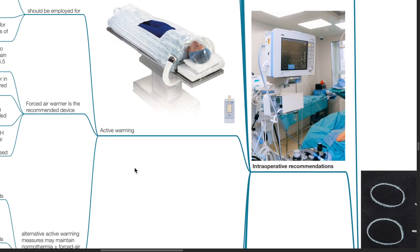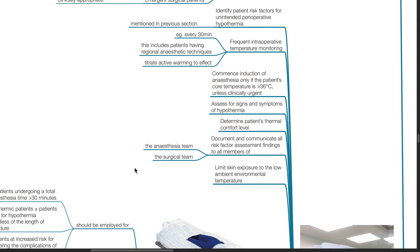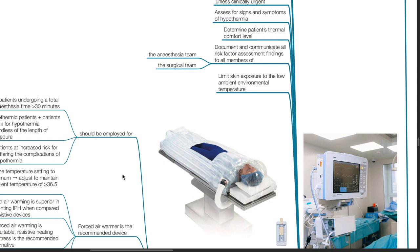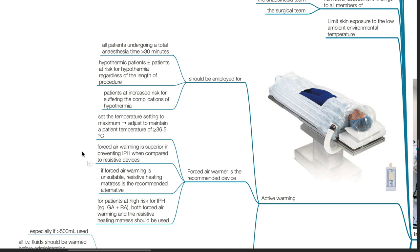Intraoperative recommendations: identify patient risk factors for unintended perioperative hypothermia. Employ frequent intraoperative temperature monitoring every 30 minutes, including patients having regional anesthetic techniques. Titrate active warming to effect. Commence induction of anesthesia only if the patient's core temperature is above 36 degrees Celsius unless clinically urgent. Assess for signs and symptoms of hypothermia and determine the patient's thermal comfort level. Document and communicate all risk factor assessment findings to all members of the anesthesia and surgical team. Limit skin exposure to the low ambient environmental temperature. Active warming should be employed for all patients undergoing a total anesthesia time of more than 30 minutes, hypothermic patients or patients at risk of hypothermia regardless of procedure length, and patients at increased risk for complications such as the elderly.